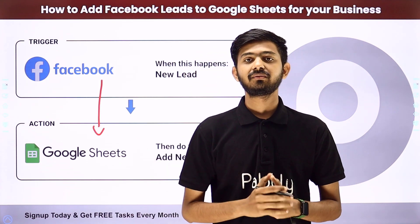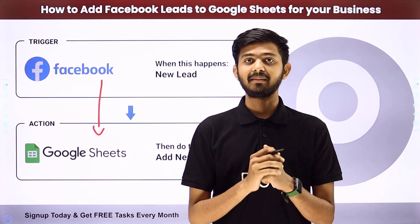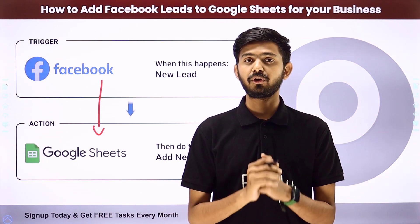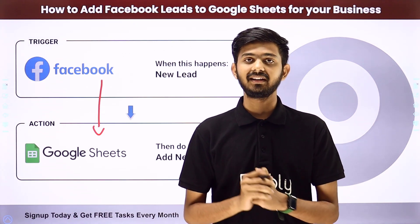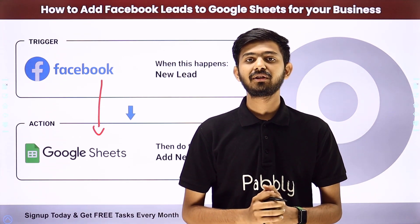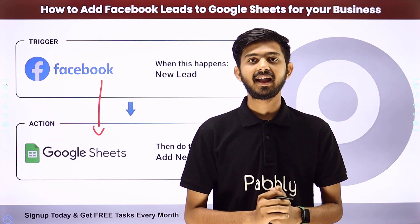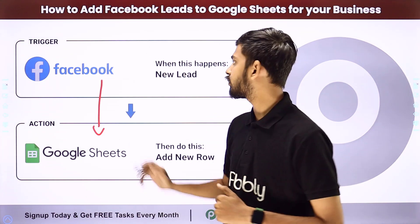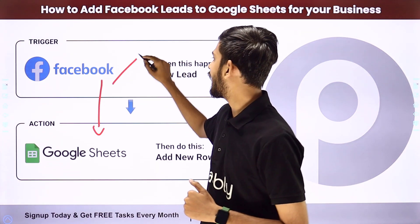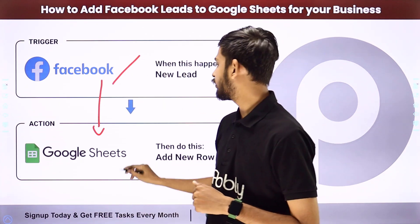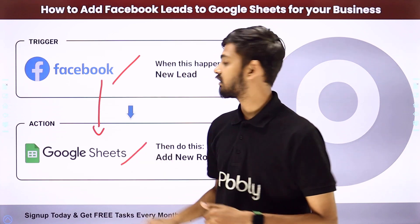For creating this integration, we are going to use Pably Connect, which is an amazing software for automation and integration. In Pably Connect, we are going to use Trigger and Action. In the Trigger application, we are going to use Facebook lead ads, and in the Action application, we are going to use Google Sheets.